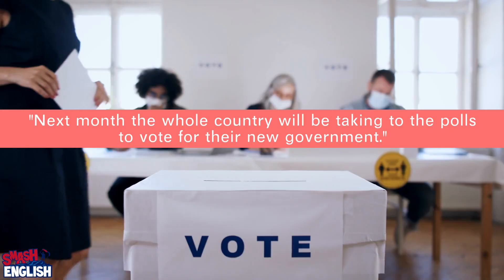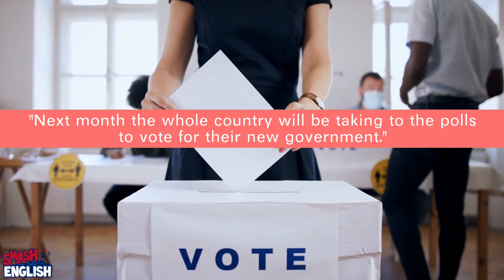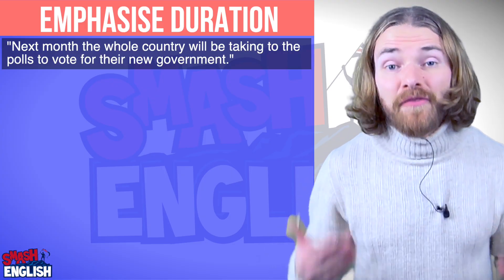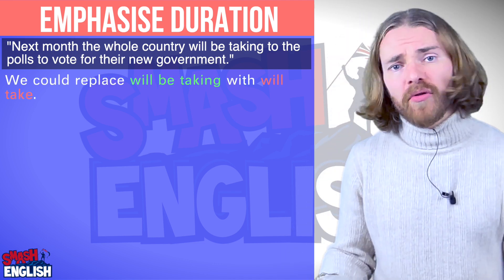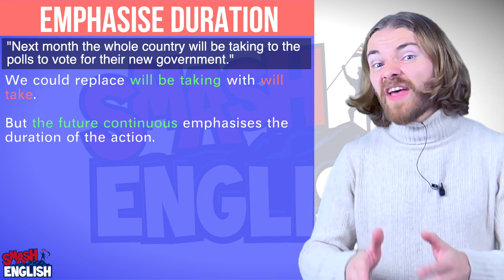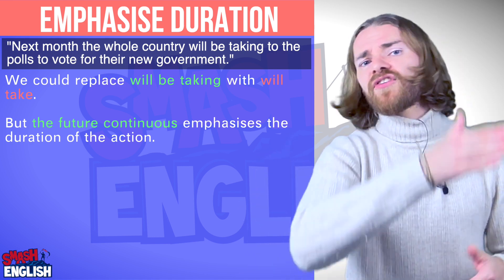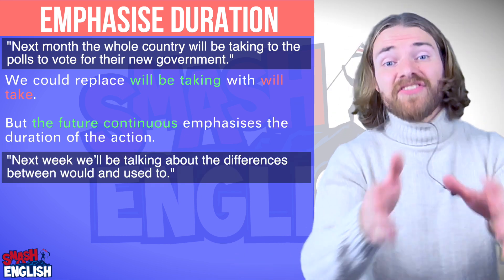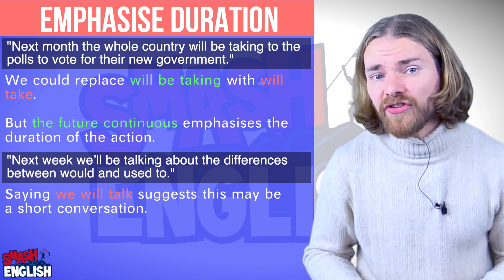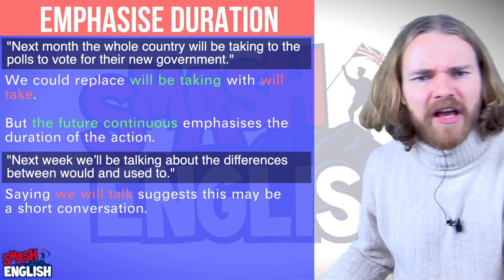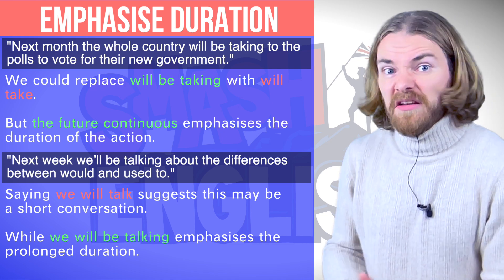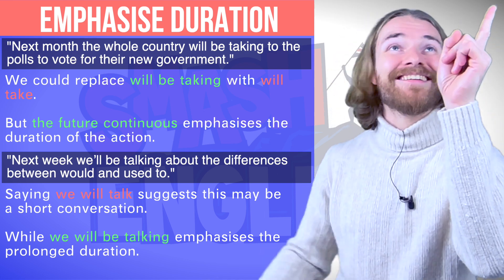Let's look at some examples. Next month, the whole country will be taking to the polls to vote for their new government. Next week, we'll be talking about the differences between would and used to. In our first example, we can replace the Future Continuous with the Future Simple — it still makes sense. However, the Future Continuous emphasizes the duration. Voting will take time; it will take place over an extended period. The second example is similar: saying 'next week we will talk about the differences between used to and would' suggests a very brief conversation, whereas the Future Continuous suggests it could take a very long time indeed, because it's very complicated. And if you want to learn all about the differences between used to and would, there's a great video right up there.